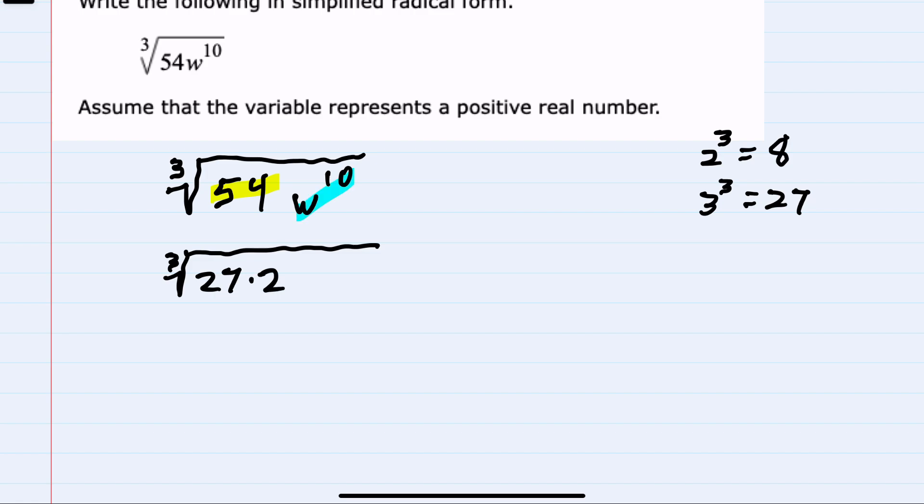to rewrite that with a power that is a multiple of 3, I can think of w to the 10th power as w to the 9th power times one more w, which would give me 10 w's being multiplied.